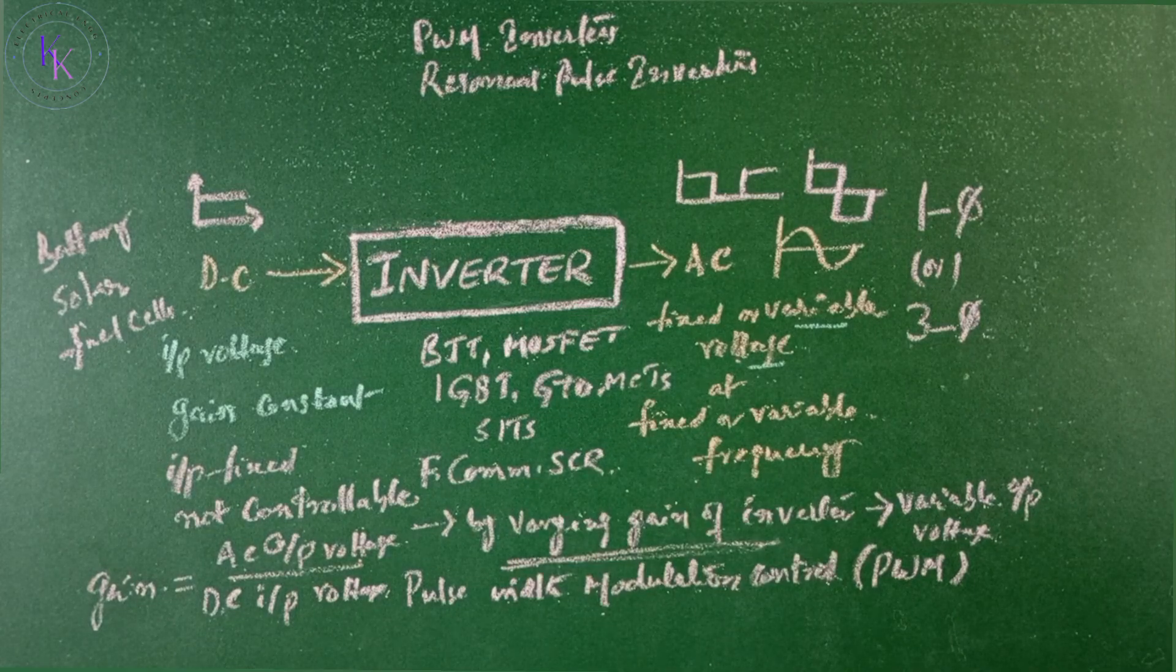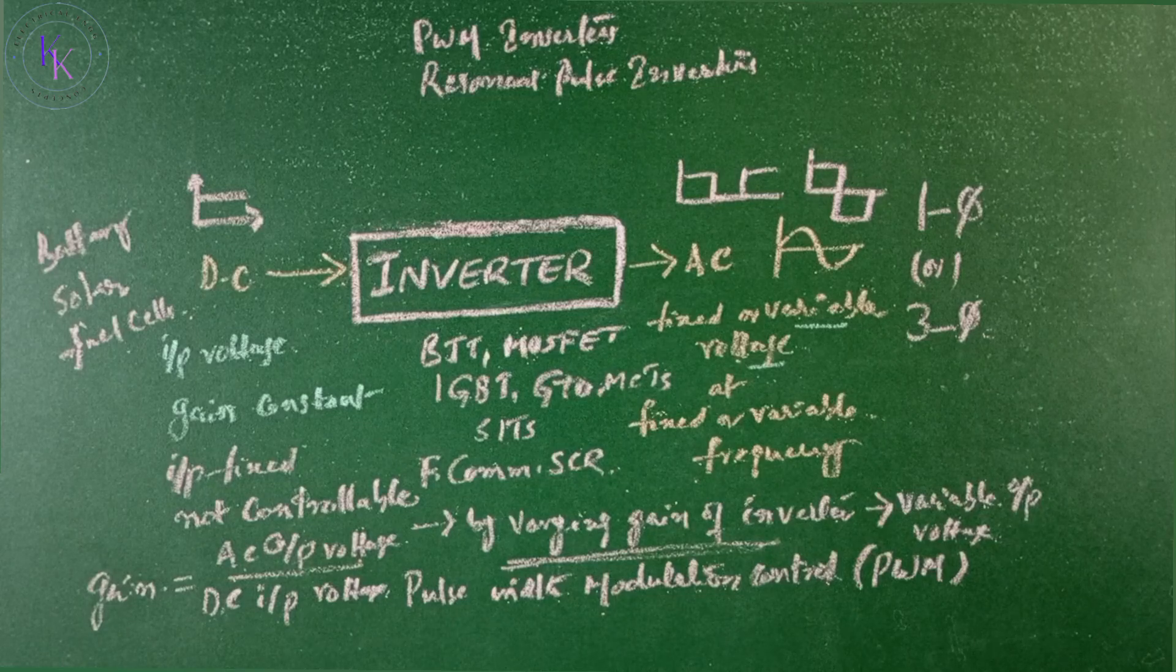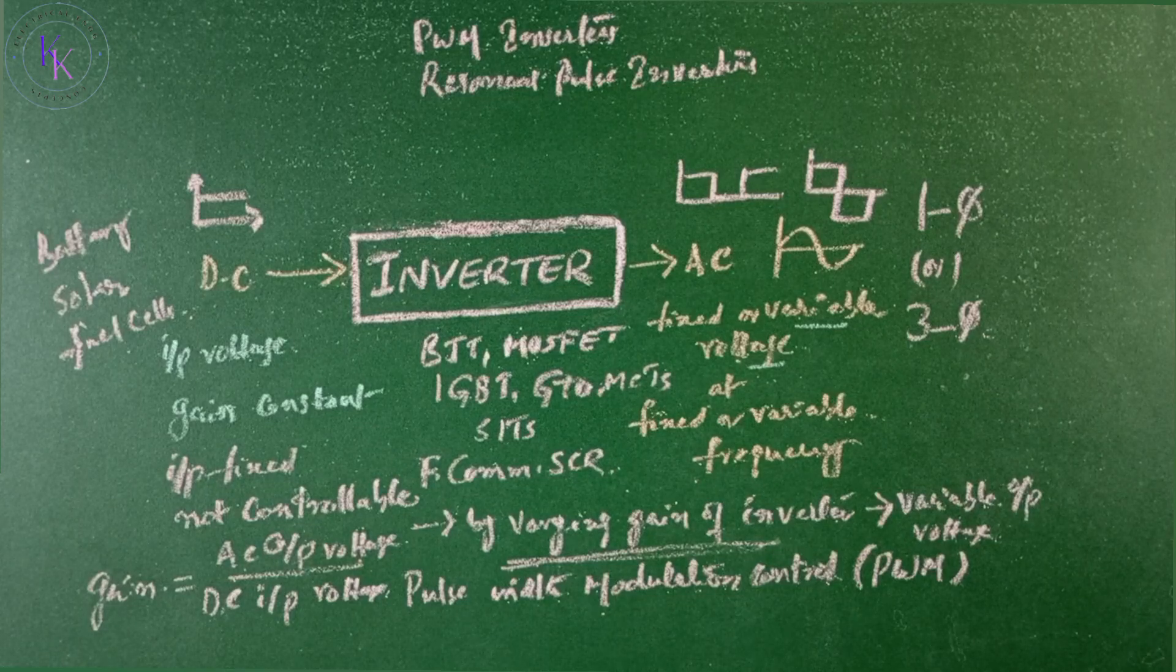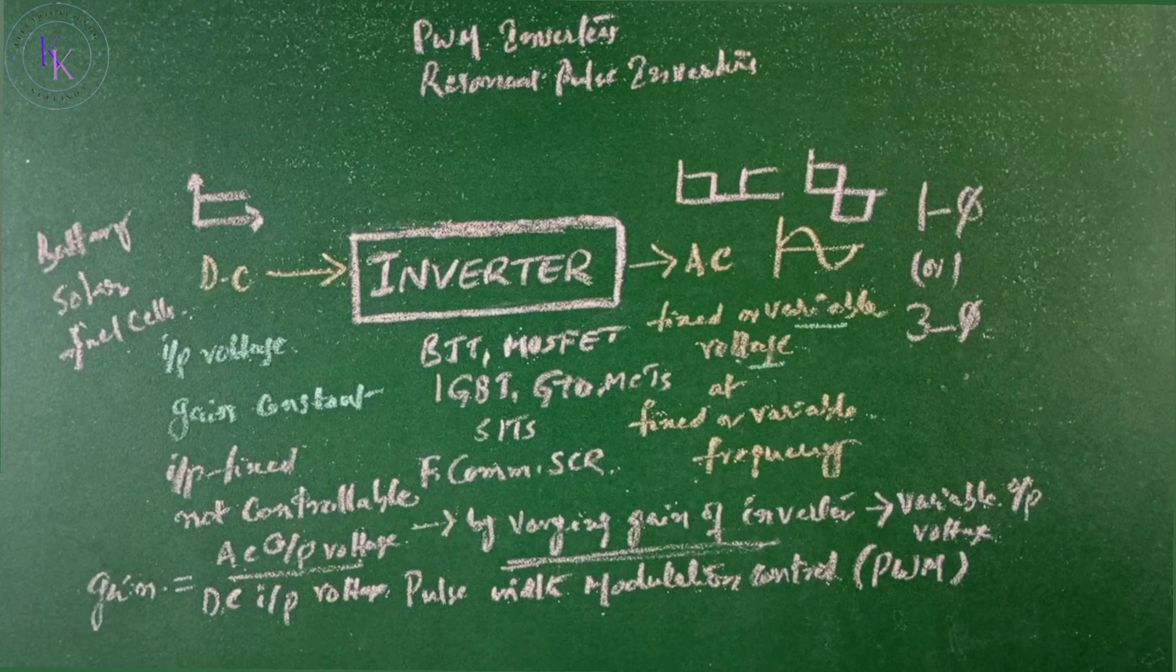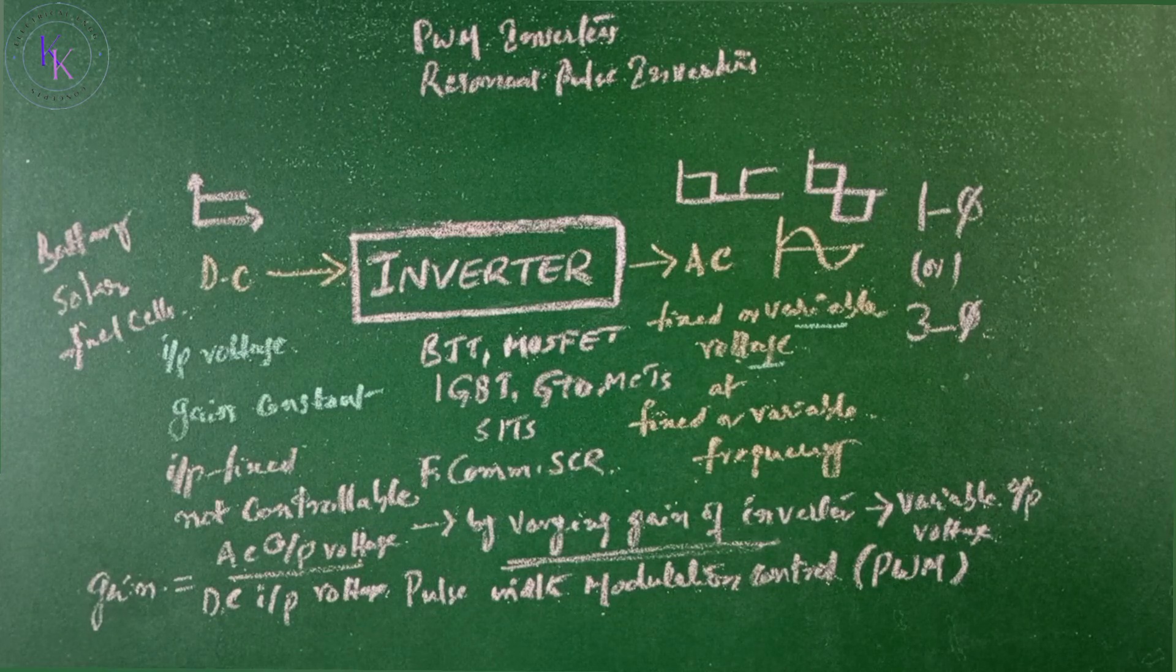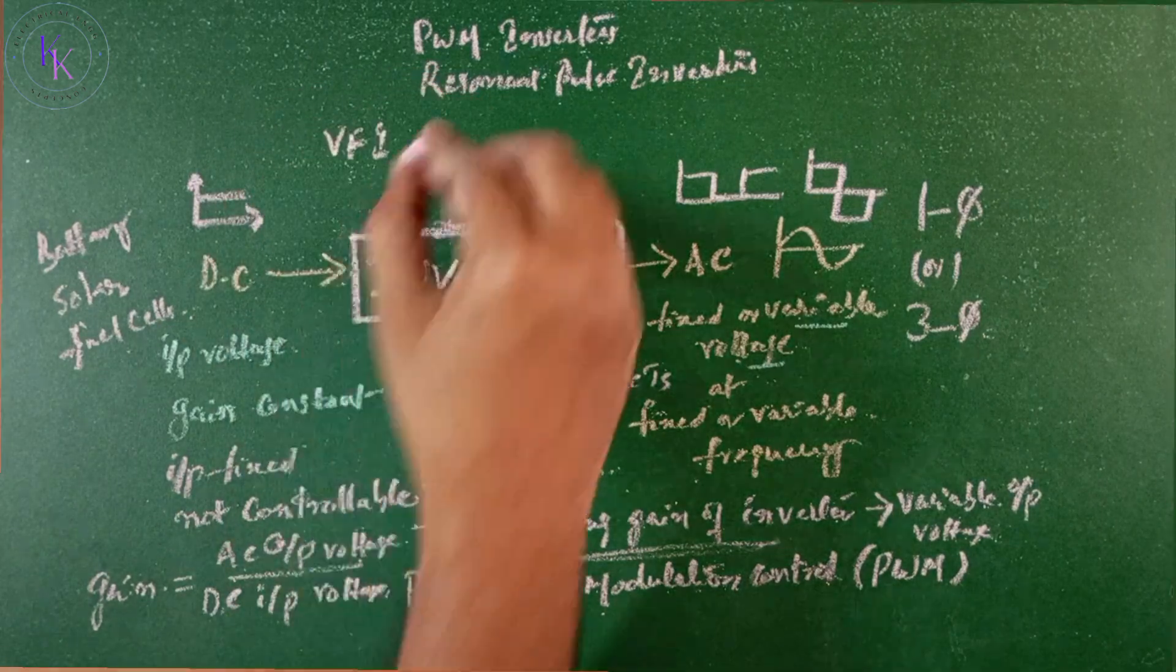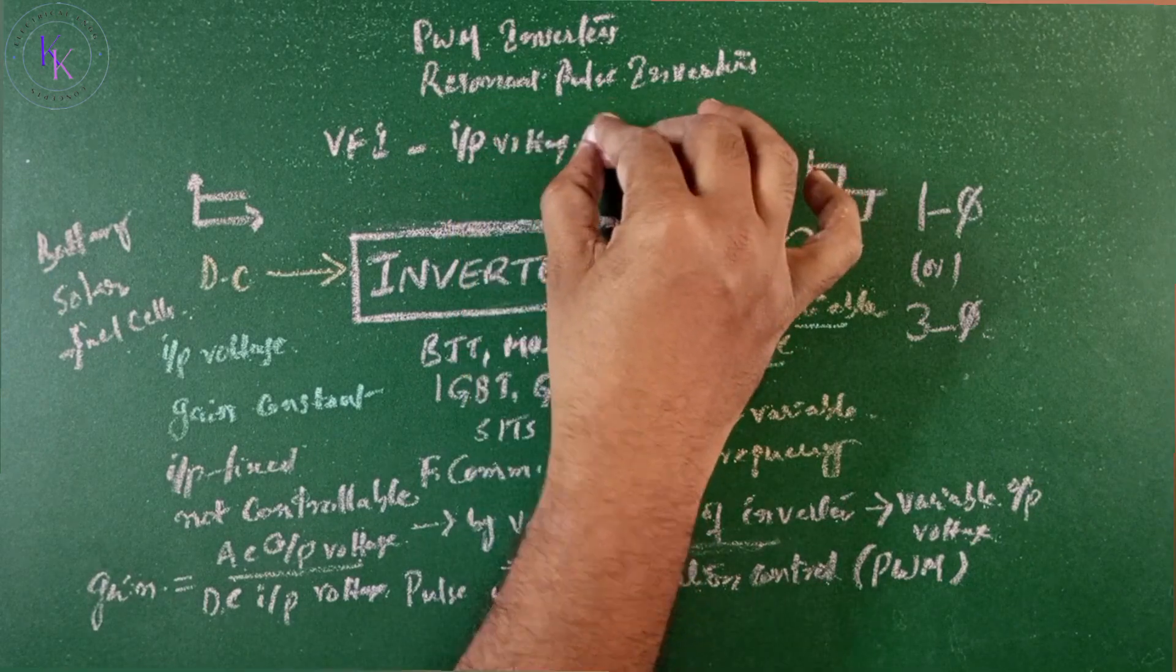These inverters generally use pulse-width modulation control signals for producing an AC output voltage. An inverter is called a voltage-fed inverter if the input voltage remains constant.